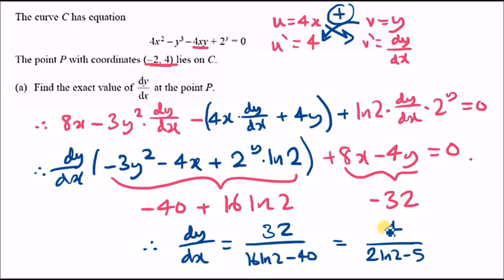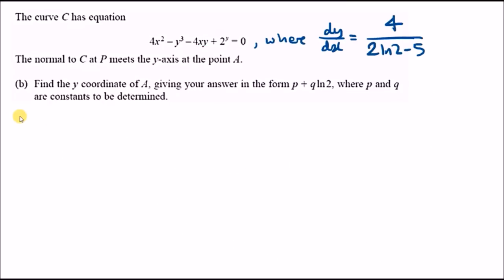Part B: the normal to C at P meets the y-axis at point A. Find the y-coordinate of A in the form p plus q ln 2. Since it's the normal, the gradient is the negative reciprocal: m equals negative 4 over (2 ln 2 minus 5).